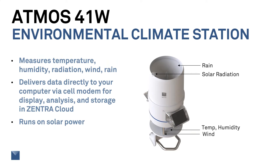A good weather station is required to provide the measurements one needs to model evapotranspiration. A really convenient one is Meter's new Atmos 41W. In addition to solar radiation, it measures temperature, humidity, wind, rain, and a number of other variables. All of these are needed for the water balance calculation. This doesn't require the ZL6 logger like the Atmos 41W did — it has its own cell modem to send data directly to Zentra Cloud, where they're immediately available to you on your computer. Zentra Cloud also does the processing of your data to give you a reference evapotranspiration for your crop each day.